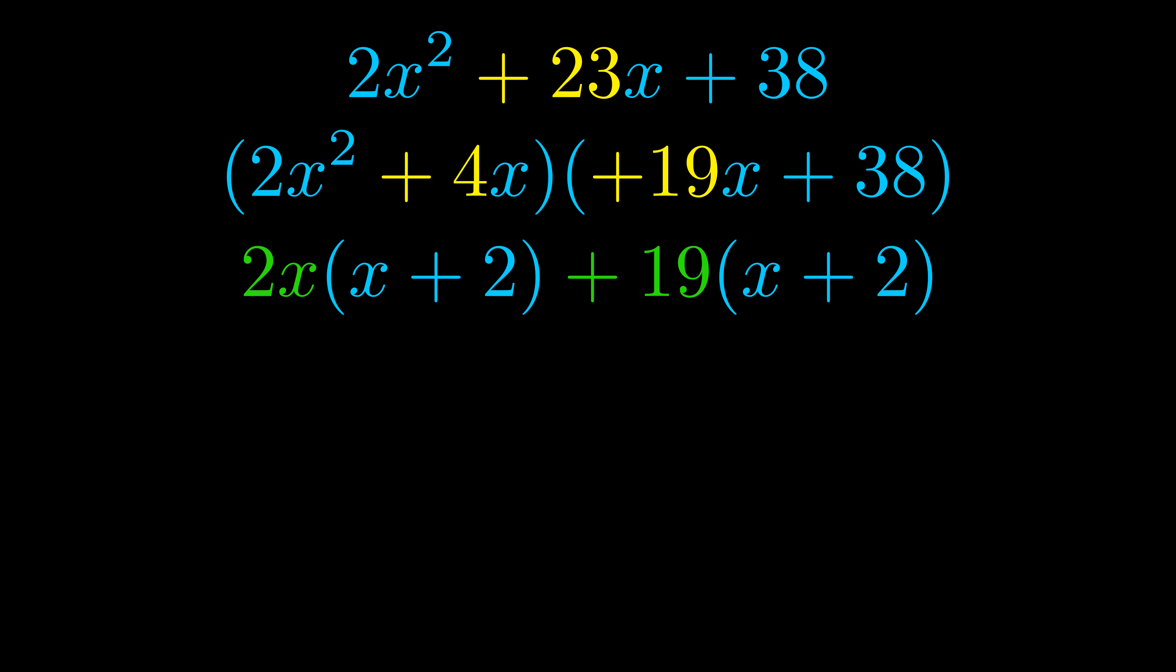Notice also how what remains inside of the parentheses is the same in both cases. The blue values are the same. Those blue values will become one of our factors and we will combine the two green values, the GCFs that we pulled out, to get the other one. And that is our fully factored equation.